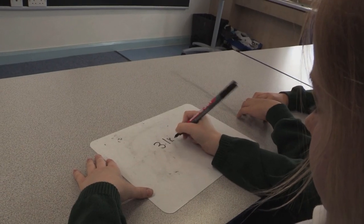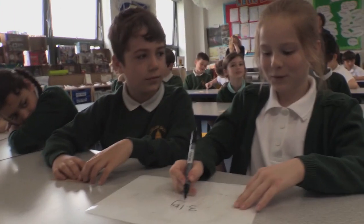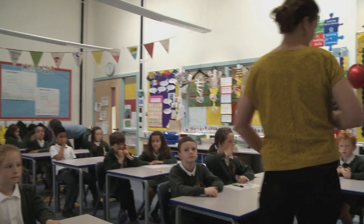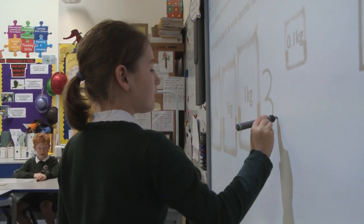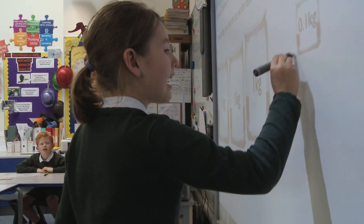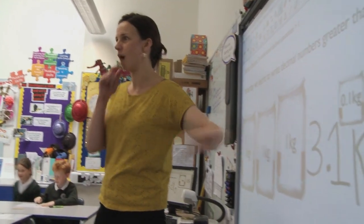I think the class is probably similar to many classes with children who, historically through school, have attained a wide range of scores in tests and have had a wide range of maths experiences in the classroom. The 3 represents that there are 3 wholes and the 1 represents 1 tenth. Isabel, why don't you come up and do this one for us? You have 3 kilograms and then you have the decimal and then you have 1 tenth. Herbert, what does the 3 represent? It represents that there are 3 kilograms. And what does the 1 represent? It represents that there is 1 tenth of a kilogram.